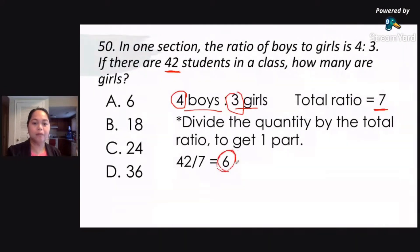Okay, so that means kada part ay 6. So that means now, para makuha mo kung ilan yung boys at ilan yung girls, i-multiply mo lamang yung proportion na nandyan, yung ratio na nandyan. Okay, so for the girls, we are asked for the girls now. So we are asked how many are girls.